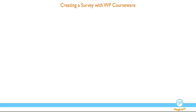Hi everyone, this is Nate Johnson from flyplugins.com and welcome to this tutorial video where we will be discussing setting up a survey within your WP Courseware course. This is the main menu for this video. The chapters are listed below and at any point you can click on one of these links to be taken directly to a topic. From throughout the video you can always return to this menu with a link at the bottom of your screen.